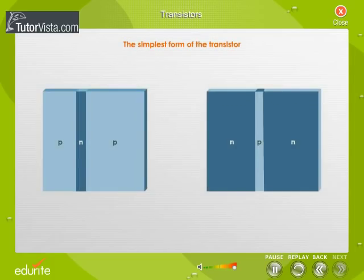The simplest form of the transistor, called the junction transistor, consists of a semiconducting material in which a very narrow N region is sandwiched between two P regions or a very narrow P region is sandwiched between two N regions. The former configuration is called a PNP transistor and the latter is NPN transistor.